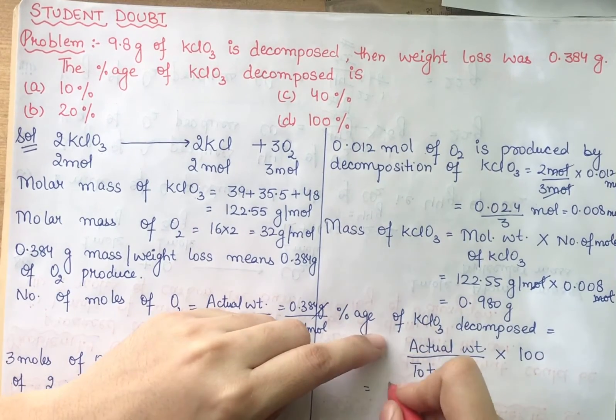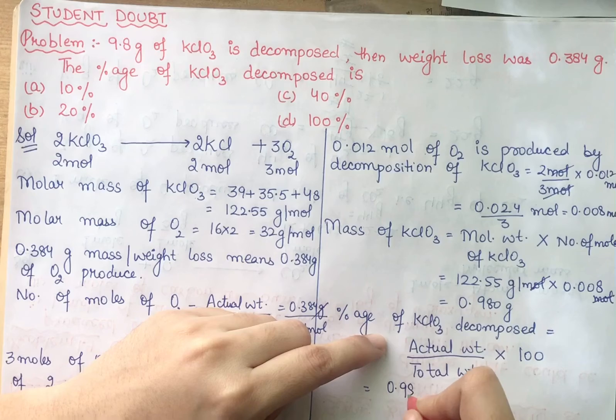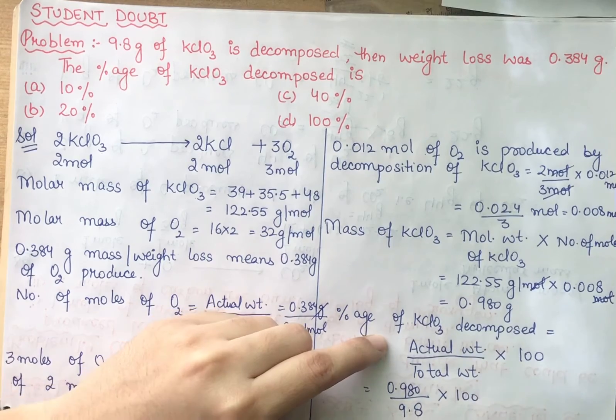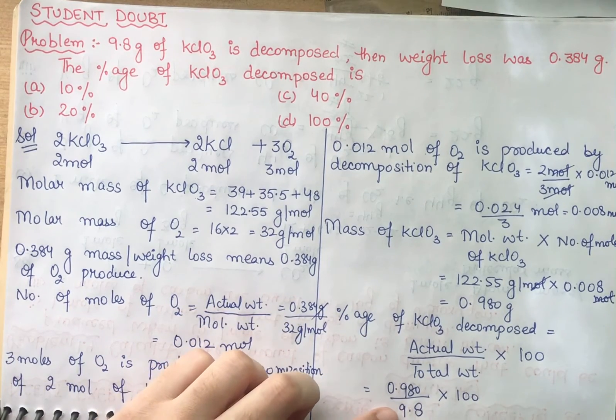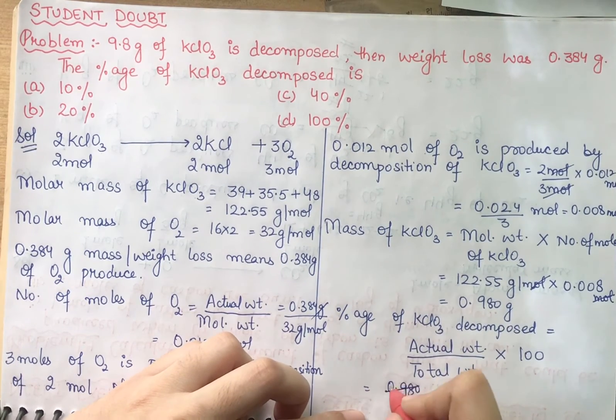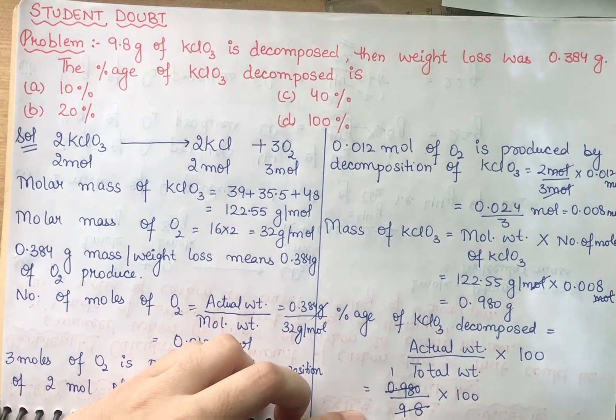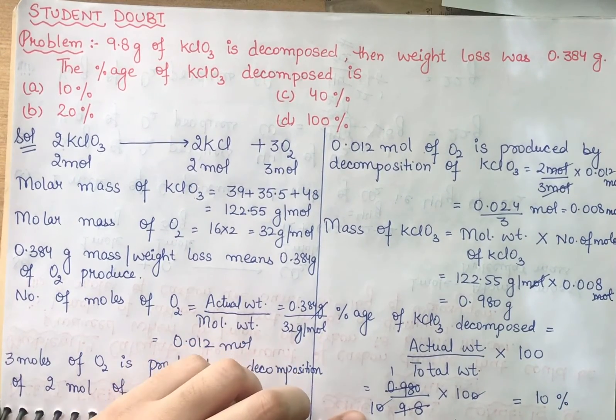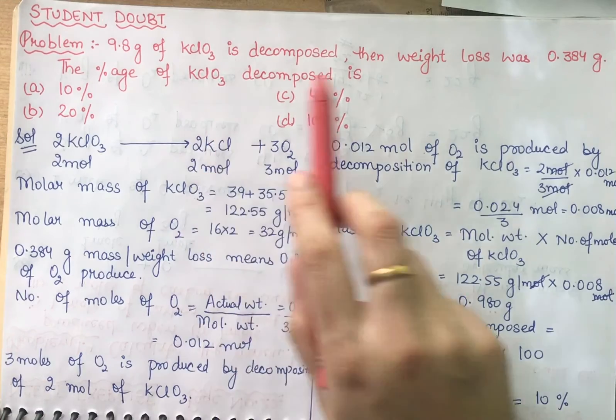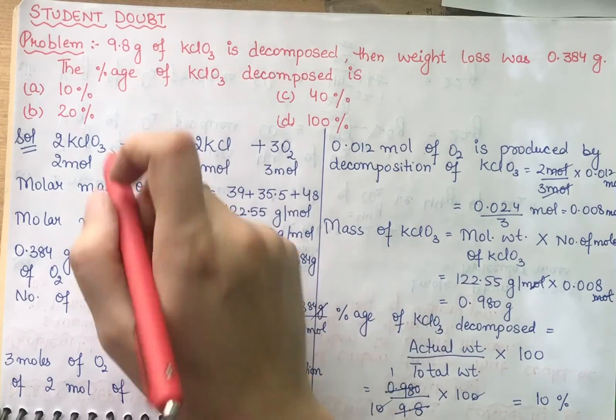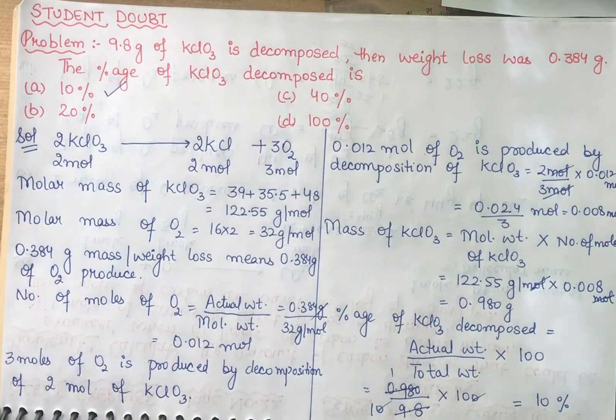Now actual weight is 0.980 divided by 9.8 times 100. When you have divided them, it is 0.918. If I cancel out, this is 10. So your answer is 10 percent. That means weight loss 0.384, that's why decomposition of KClO3 is 10 percent.